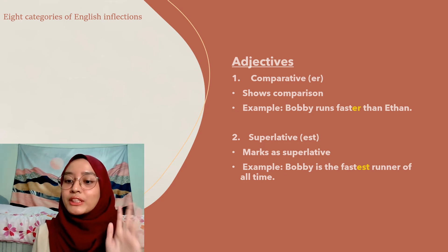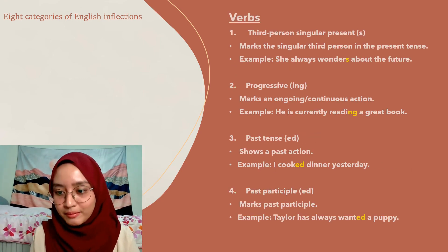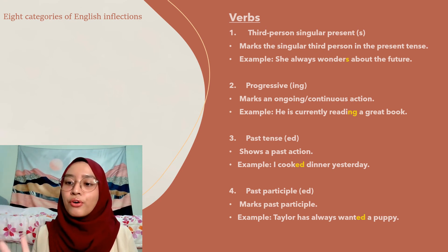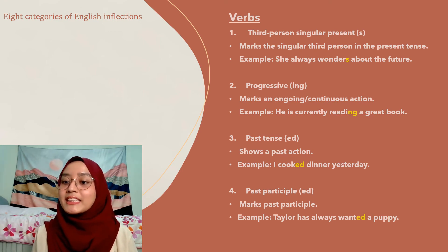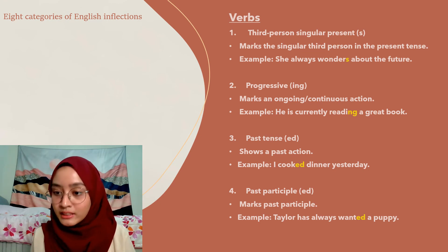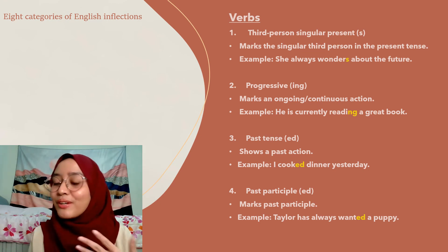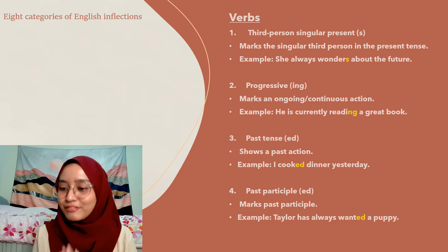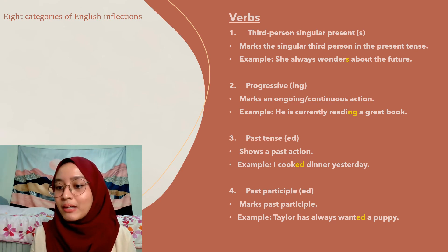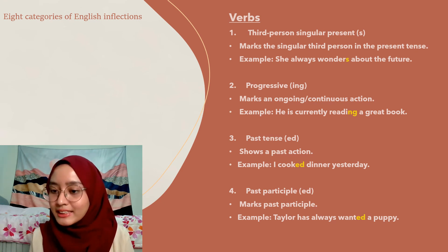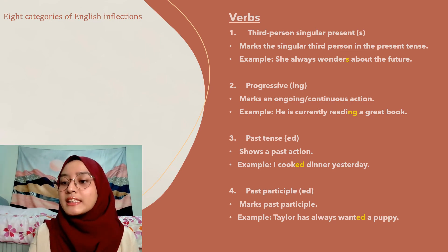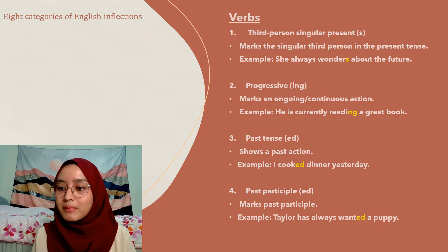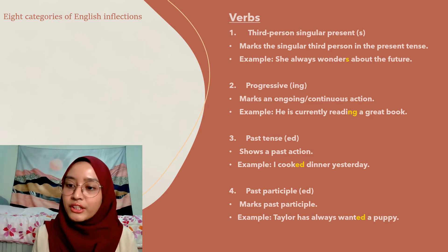Under verbs, we have four categories. The first is the third person singular present, which adds the suffix -s after a verb to mark the singular third person in present tense — for example: 'She always wonders about the future,' 'She always thinks about life.' Next is the progressive, which uses the suffix -ing to mark an ongoing or continuous action — for example: 'He is currently reading a great book,' 'He is eating in the kitchen right now.'